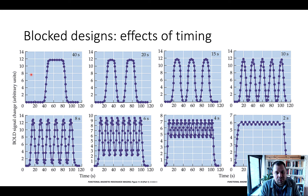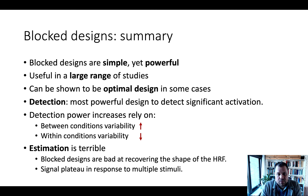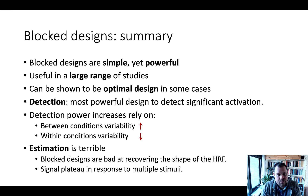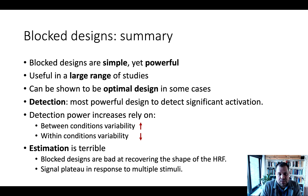To summarize, block designs are simple but very powerful and useful across a large range of studies. They are particularly optimal when you want maximum power to detect significant activation — for example, to determine the brain location involved in a novel task. Detection power depends on between-condition variability, within-condition variability, and their difference, which relates directly to functional SNR.